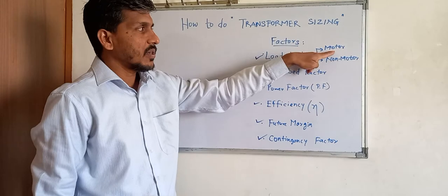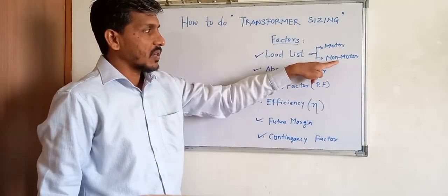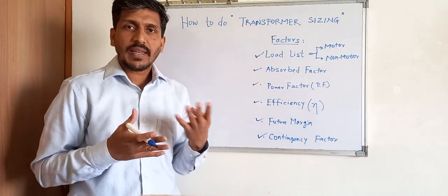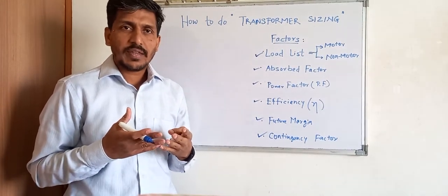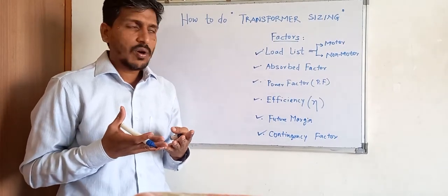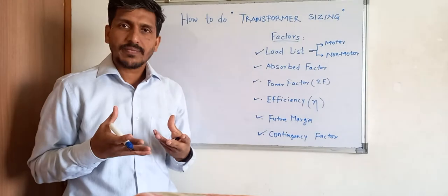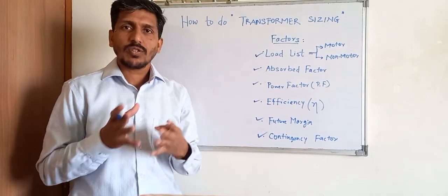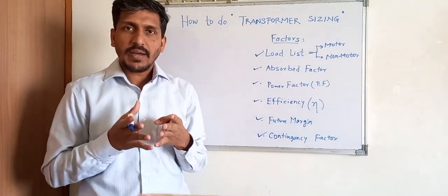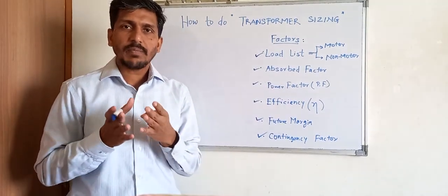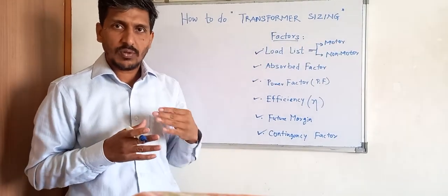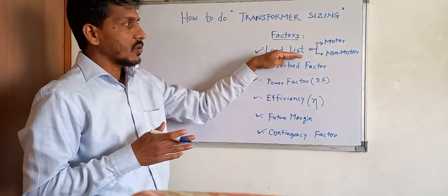Non-motor loads include lighting loads, critical or emergency lighting, exit lights, and welding sockets — any kind of load where a motor is not involved. In a plant, the major loads — 80 to 90 percent — constitute your motor load list, so we will focus on motor loads.